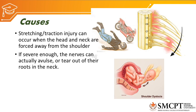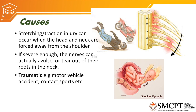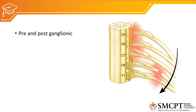If severe enough, the nerves can actually avulse out of the spinal cord or tear from the roots. Traumatic causes include motor vehicle accidents, contact sports injuries, and direct assault. The most common non-traumatic cause is obstetric palsy during birth, mostly due to shoulder dystocia, where the shoulder gets stuck and the head and neck are pulled away from the shoulder for delivery, injuring the brachial plexus.